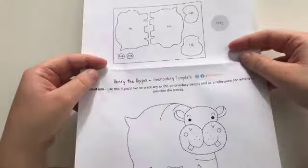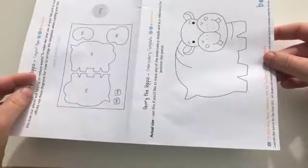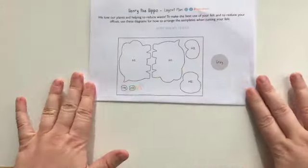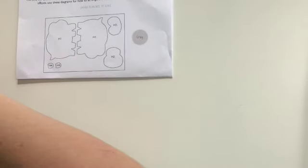In your kit you'll have this sheet which is your layout plan and embroidery template. You're going to be using this layout plan, so I'm going to keep this out. You also have this sheet which is your cutting template.